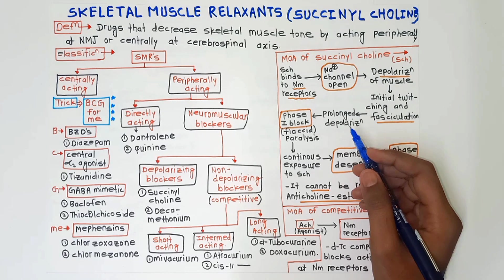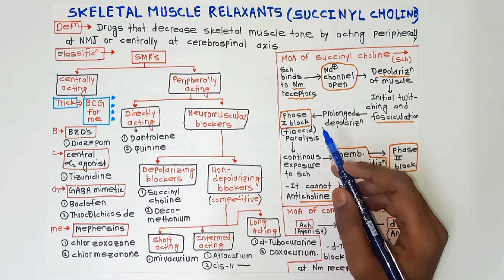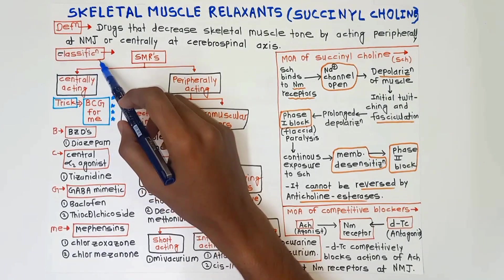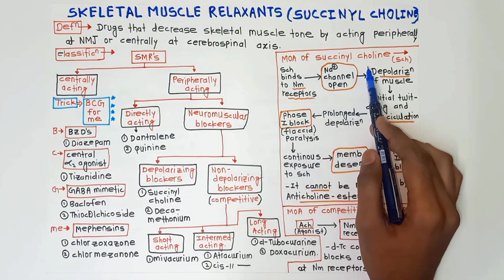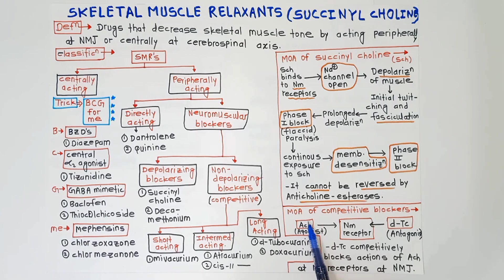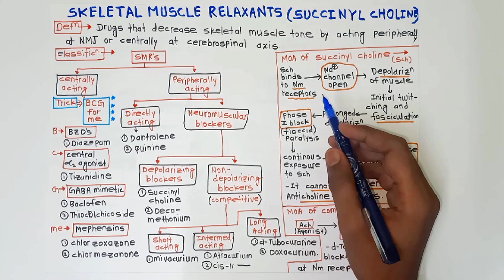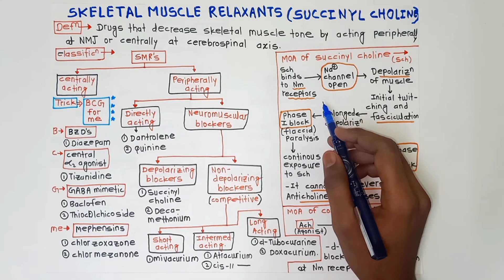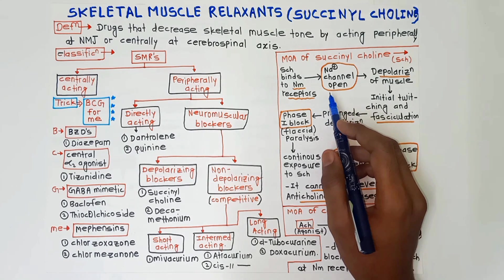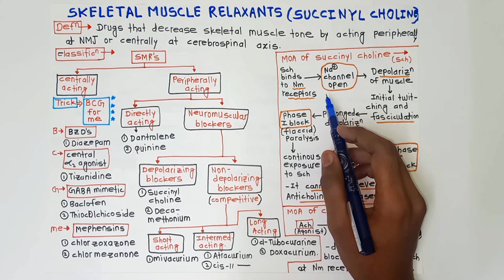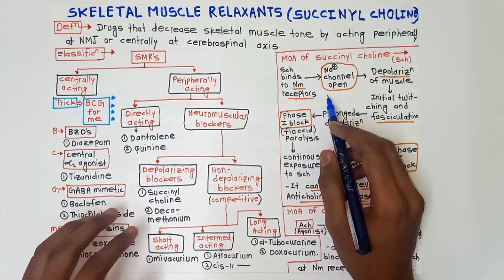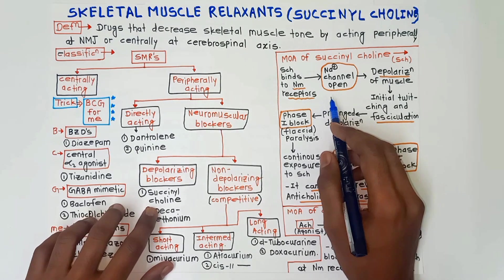The questions asked in your exam regarding skeletal muscle relaxants include: the definition, classification, mechanism of action of depolarizing blockers, mechanism of action of non-depolarizing (competitive) blockers, and the uses and adverse effects of succinylcholine. I will cover this topic in only two pages and give you tricks to remember it very easily. Watch the video till the end and if you like it, do subscribe to my channel.